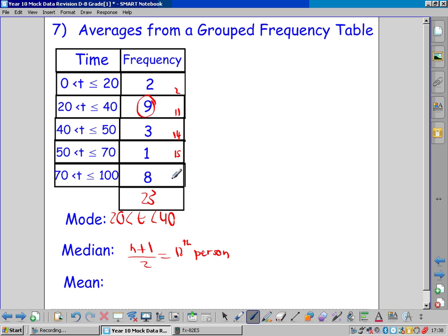15, 23. Little running total. The 12th person is clearly in this row. So the median class is 40 to 50.